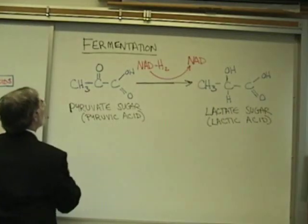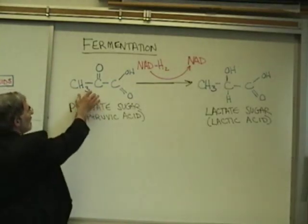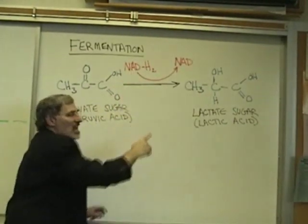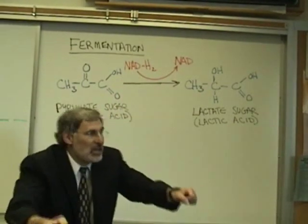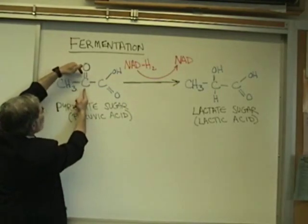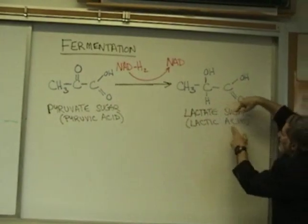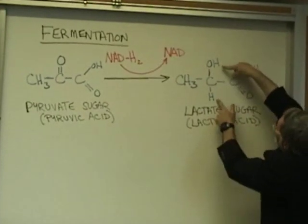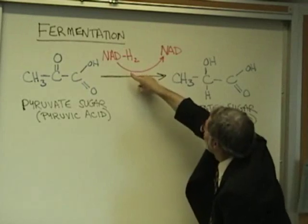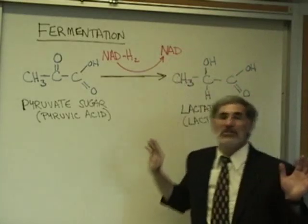When the pyruvate sugar gains these two additional hydrogen atoms that came from the sugar to begin with, that turns it into lactic acid. The pyruvate or pyruvic acid is three carbon atoms big, and here the NAD with its two hydrogen atoms transfers them right onto the middle carbon of the pyruvate sugar, turning it into lactate or lactic acid. The NAD is then empty.